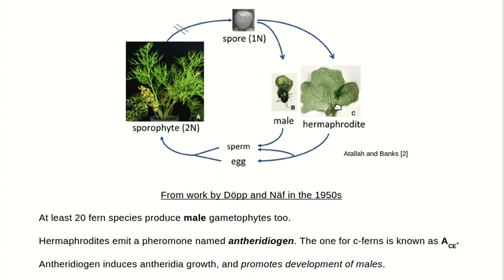This confers a genetic advantage on the hermaphrodite gametophyte — namely, that it's encouraging more males and therefore more sperm to be produced by spores that are likely to be less closely related to the spore from which it itself emerged. That increases its genetic diversity, as opposed to being fertilized by sperm from its own gametophyte, which would obviously produce less genetic diversity.